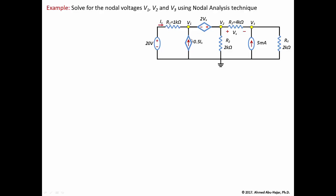Looking at the circuit, the first dependent source is a voltage source — we recognize it by the polarities. The second one is a current source, identifiable by the arrow inside it, indicating the direction of current going into node v1. Since we're doing nodal analysis and solving for v1, v2, and v3, we need to express the dependent parameters vx and ix in terms of those nodal voltages.